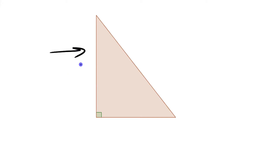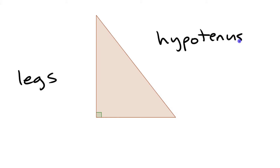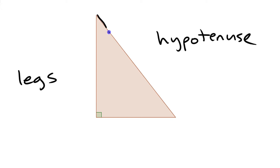Some terms to note: the two shorter sides of a right triangle are referred to as the legs, and the longest side — the one across from the right angle — is referred to as the hypotenuse. The legs are the ones that make up the right angle, and the hypotenuse is the one that doesn't touch the right angle; it's across from it.